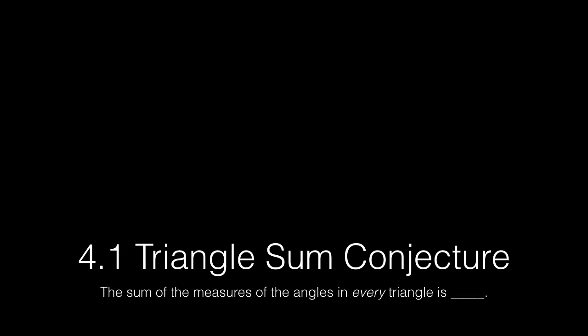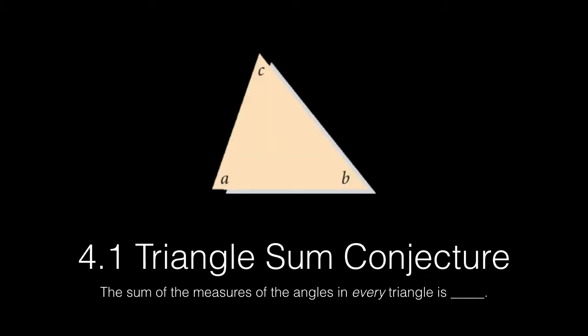Section 4.1 is the triangle sum conjecture. The triangle sum conjecture is all about the sum of the measures of the angles in triangles, and it turns out that that sum is always 180 degrees. Here's a quick demo.